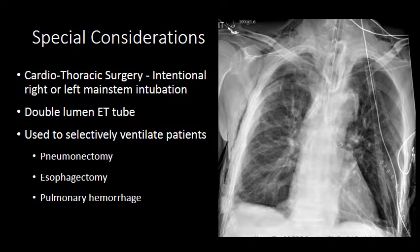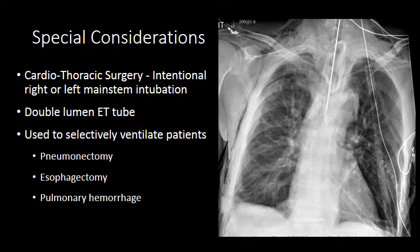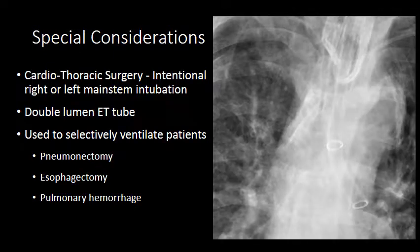There are certain instances in which we want to selectively intubate the right or left lung, as opposed to the trachea. This commonly occurs during cardiothoracic surgery and often employs a double lumen endotracheal tube that allows for selective intubation and ventilation of the right or left mainstem bronchus. In this case, we see the white line of the endotracheal tube with additional structure headed down the left mainstem. Zooming in, we see two rings demarcating the dual lumen of the tube coursing into the left mainstem bronchus.